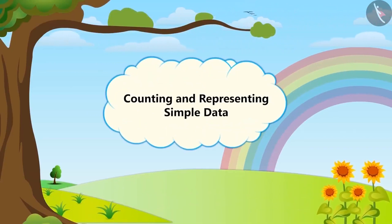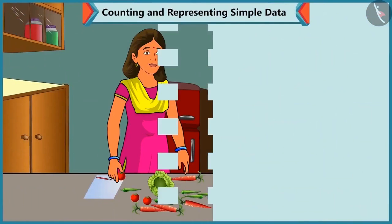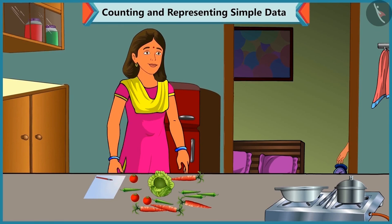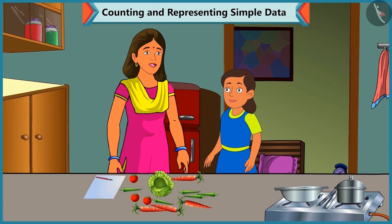Counting and Representing Data. Bubbly asks her mummy what she is doing. Mummy explains she is checking which vegetables are left and how many. Bubbly offers to help, and Mummy agrees, explaining: first we group the vegetables, then we count them, and then we write their numbers.